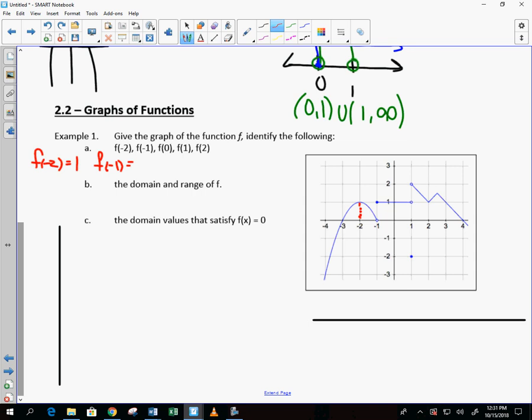F of negative 1. That means, what is it? It's kind of tough to tell. It kind of looks like I have two possible values, don't I? Which one is it? Is it both of them? Remember, the definition of a function says that every element in the domain has exactly one element in the range. So, if we say it's both, then it would not be a function. So, which one is it? It's 1 because you've got a closed circle. So, f of negative 1 is 1.